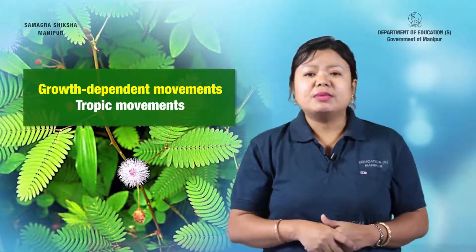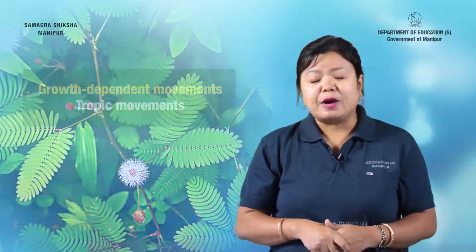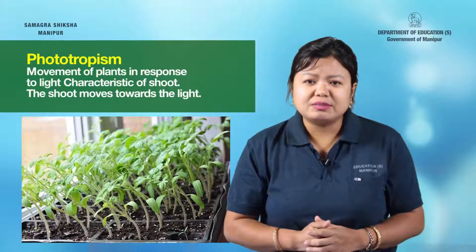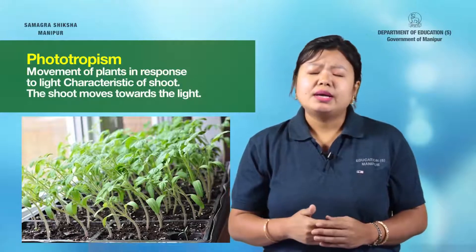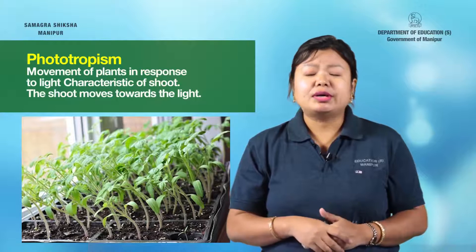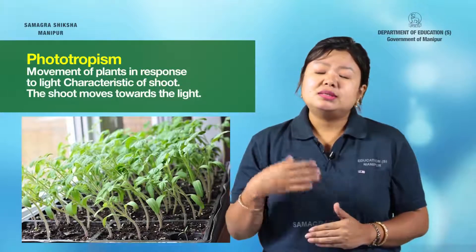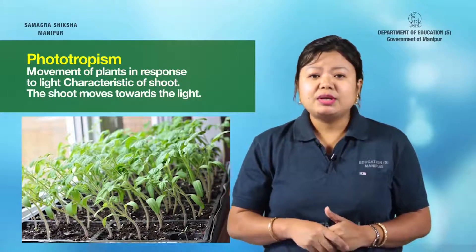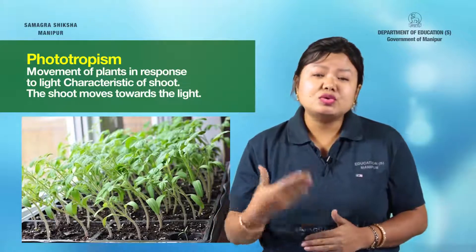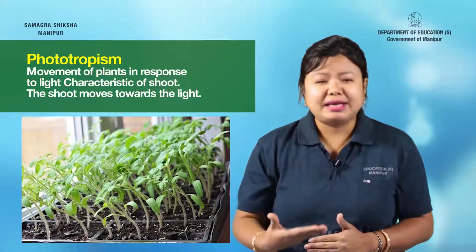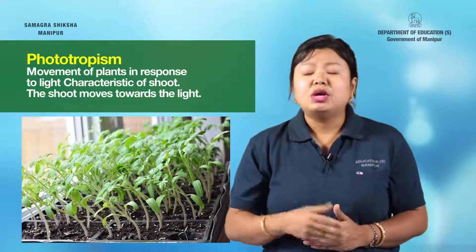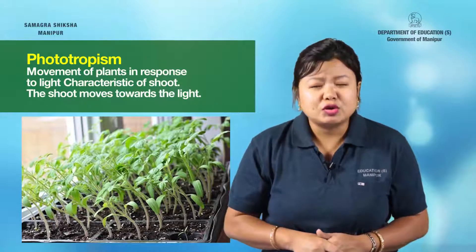In every tropic movement, there is phototropism. The name indicates that 'photo' means light. Phototropism is the movement of plants in response to light.